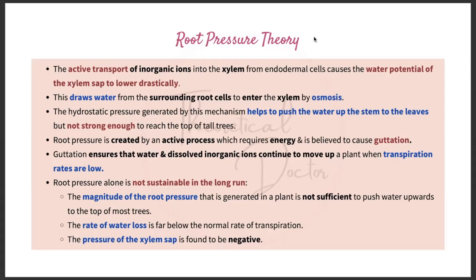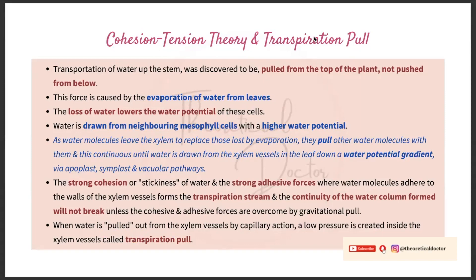Root pressure alone is not sustainable in the long run, for three reasons. First, the magnitude of root pressure generated in a plant is not sufficient to push water upwards to the top of most trees. Second, the rate of water loss is far below the normal rate of transpiration. Third, the pressure of the xylem sap is found to be negative.